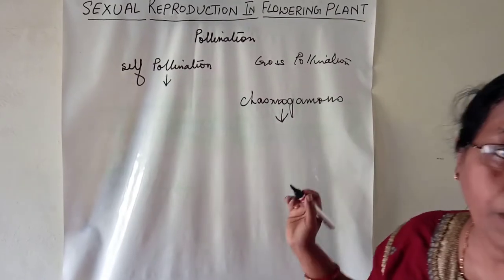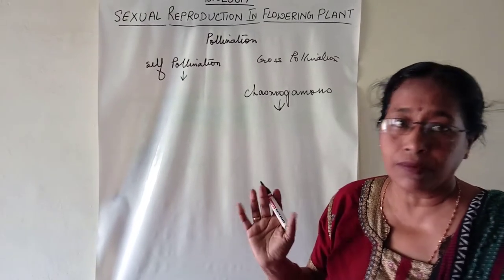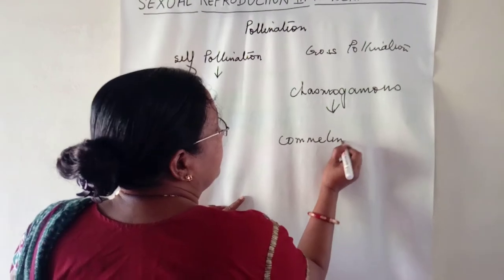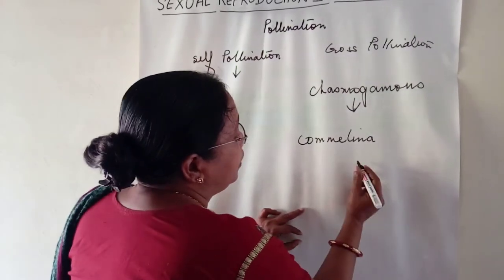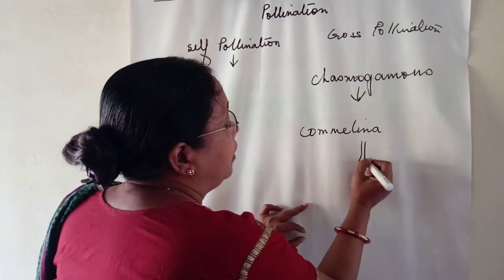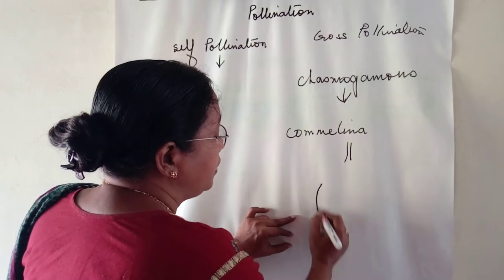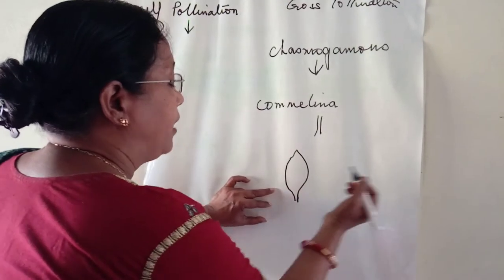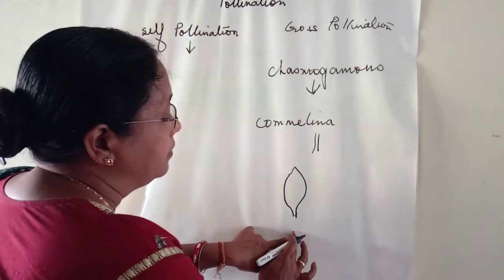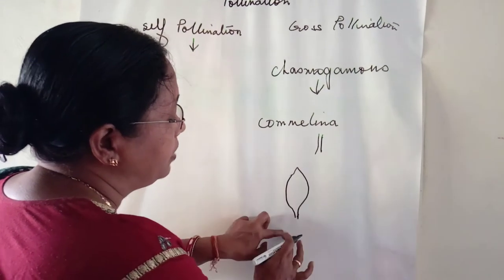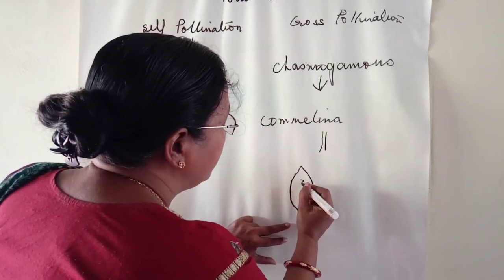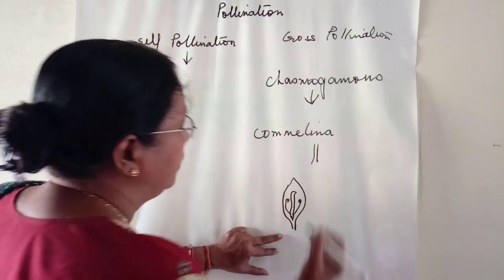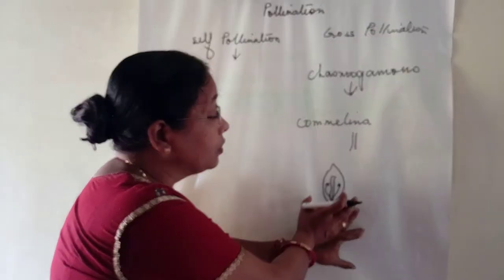We take the example of a plant known as Commelina, which shows both chasmogamy and cleistogamy. It has chasmogamous flowers on the aerial side, while below on the sub-aerial side, the floral parts are enclosed in a bush shape — the petals are closed, and inside the stigma and anthers are present. Pollination takes place in this closed form.